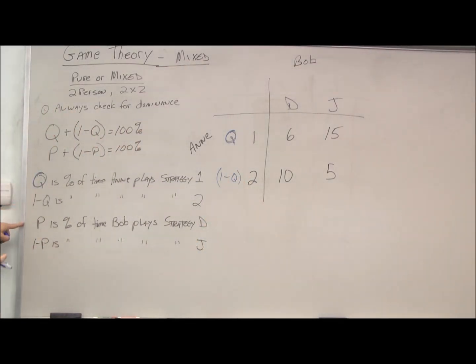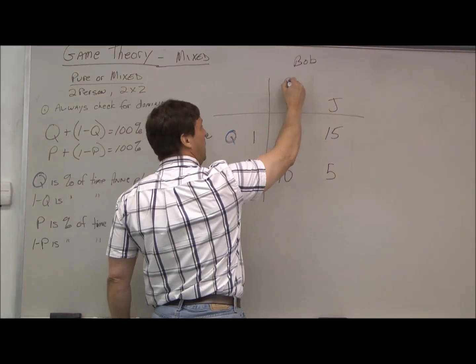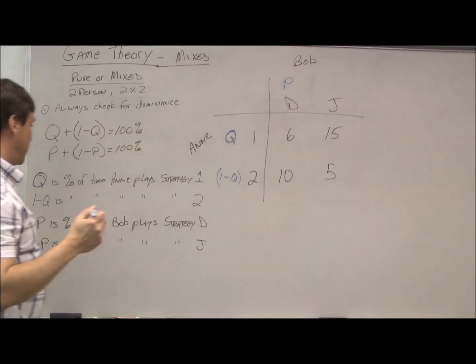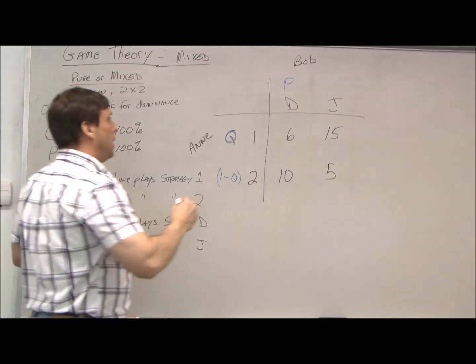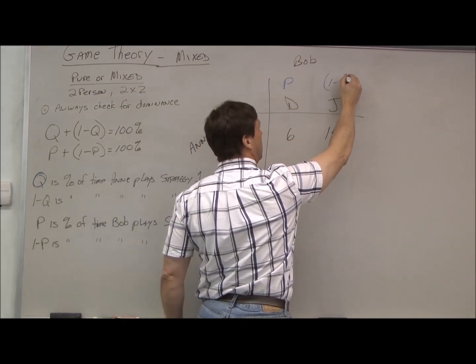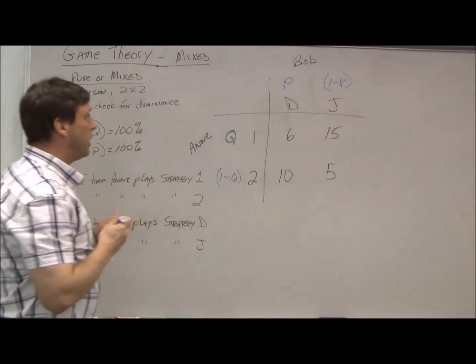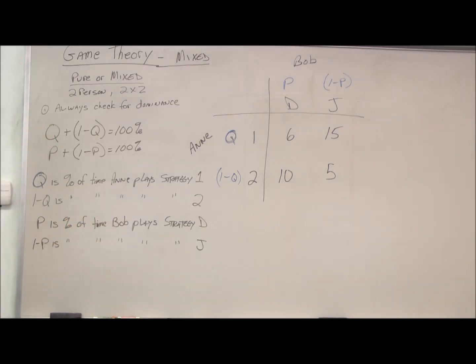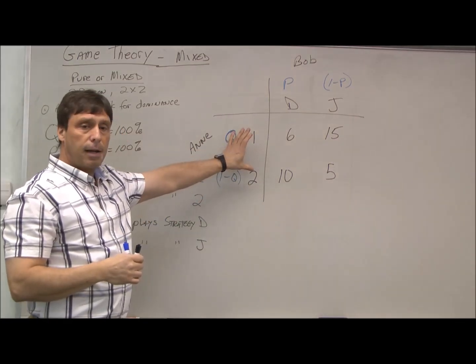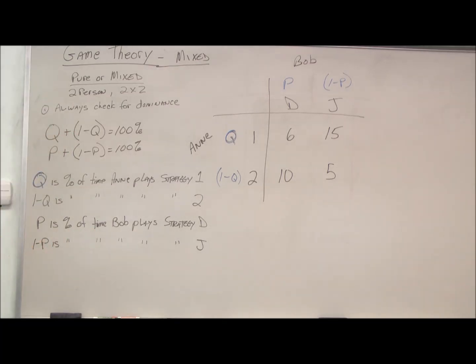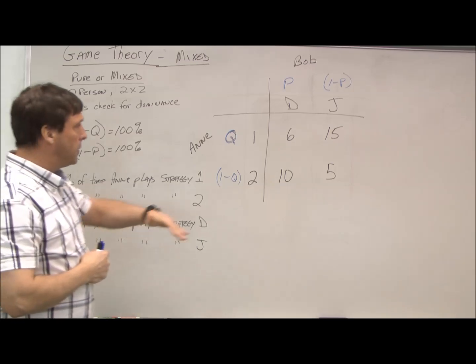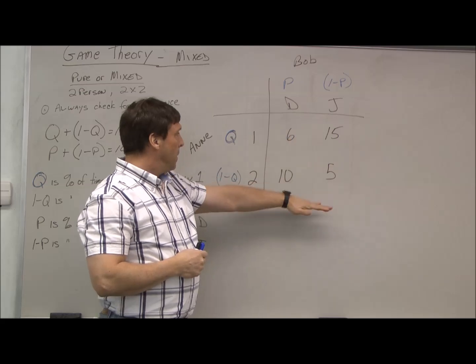Q is the percentage of time Annie will play strategy one, and one minus q is the percentage of time she'll play strategy two. Same with Bob: p is the percentage of time Bob will play strategy D, and one minus p is the percentage of time Bob will play strategy J. So over time, they'll switch between their two options. This tells us how much time they should play each strategy.